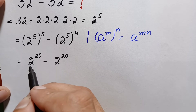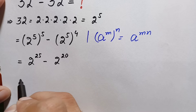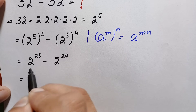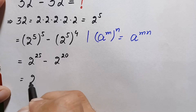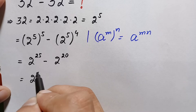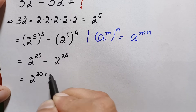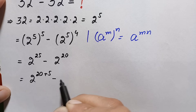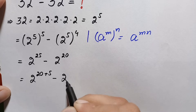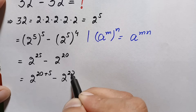To factor, we first rewrite the first term: 2 raised to power 25 can be written as 2 raised to power (20 plus 5), minus 2 raised to power 20.